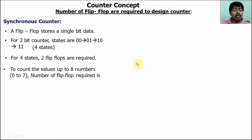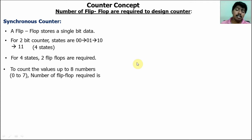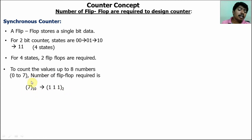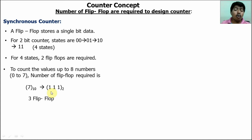Another example: to count values up to eight numbers — eight states from zero to seven. The maximum number is seven. Convert this maximum number seven into binary: the equivalent binary for decimal seven is 111. To represent this maximum number, three digits are required, meaning three flip-flops are required. So to count eight states, three flip-flops are required.